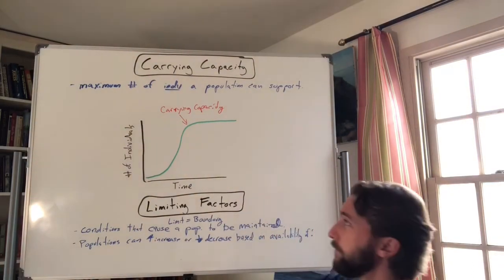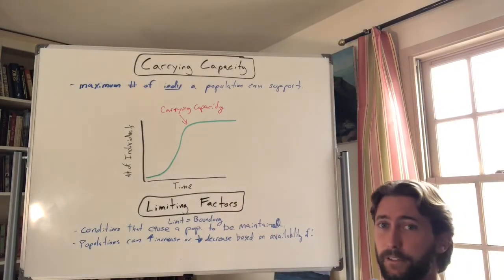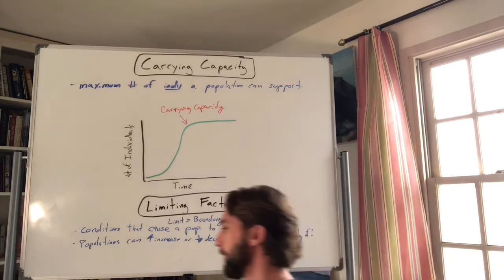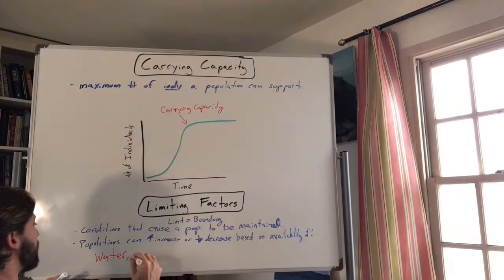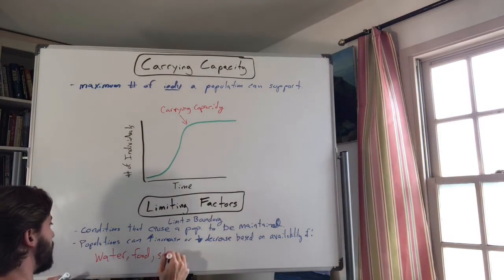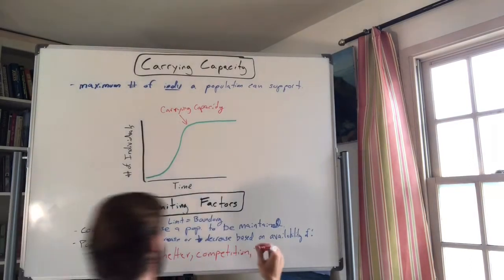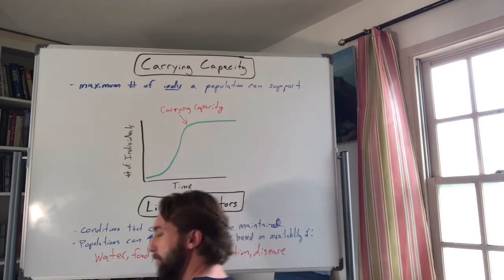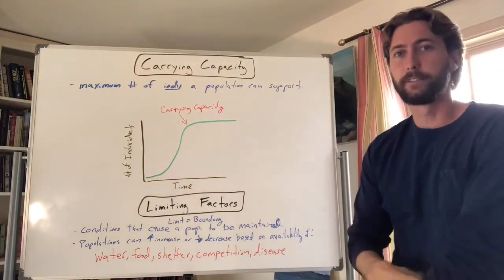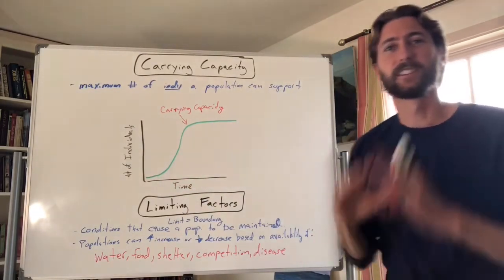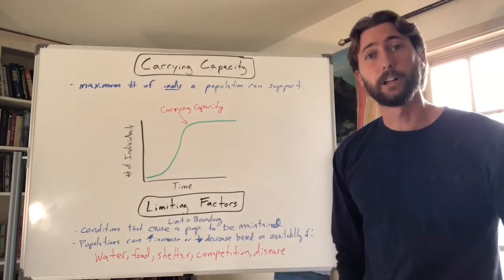Populations can increase — meaning birth rates are higher than death rates — or decrease, where death rates are higher than birth rates, depending on the availability of resources like water, food, and shelter, or the level of competition, or disease. For the most part, populations don't grow forever. This is called a logistic growth curve — it grows rapidly but hits a limit — versus exponential growth, which just keeps accelerating.